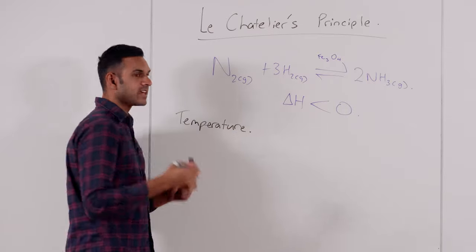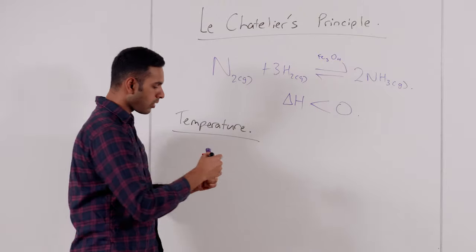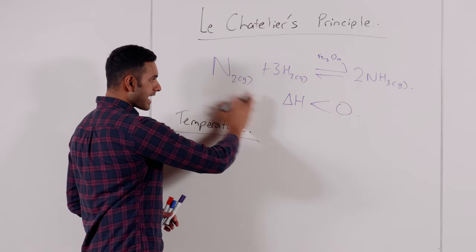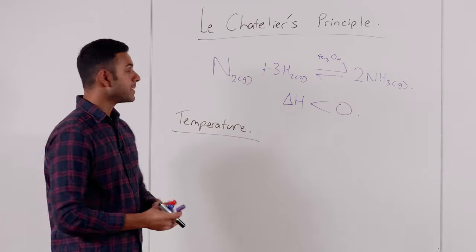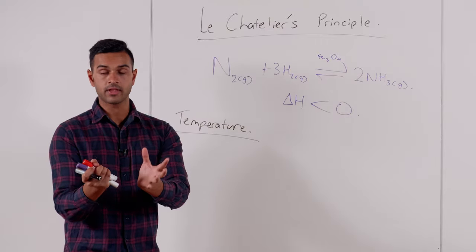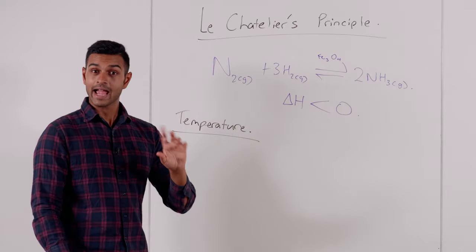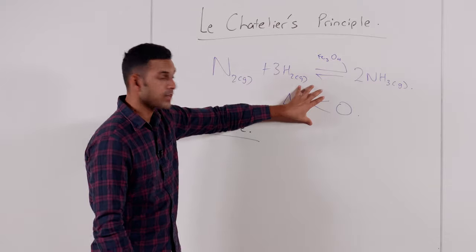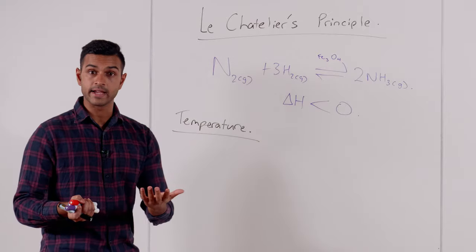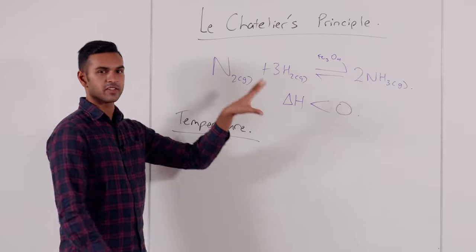How does a temperature change affect the position of equilibrium? Temperature change is all to do with the enthalpy of the reaction. This reaction is exothermic, which means as you go forward it produces heat — it warms up the environment. And conversely, as the reaction goes backwards, it's endothermic — it consumes heat and cools down the environment. This is always defined for the forward reaction.